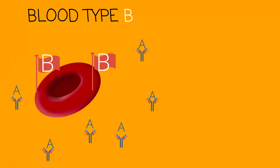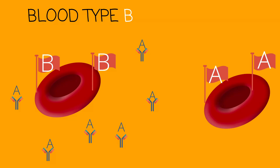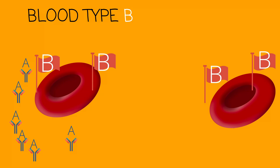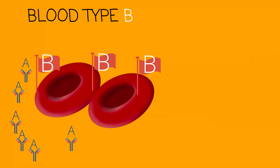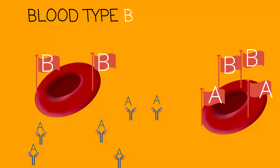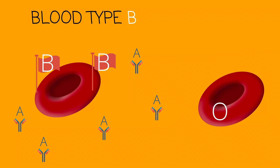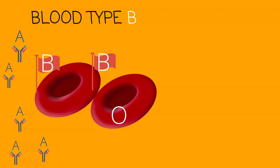Blood type B has B antigens and A antibodies floating around it to protect it. If blood type A comes around, it will be rejected and attacked by the A antibodies. If blood type B comes around, it will be accepted. If blood type AB comes around, it will be rejected because the antibodies will see those A flags as a threat. If O comes around, it will be accepted — it is seen as no threat because it has no flags.